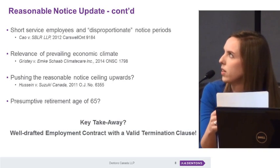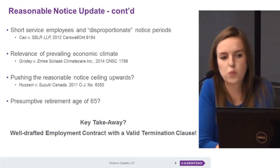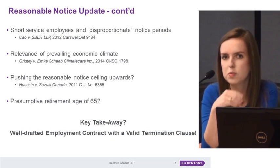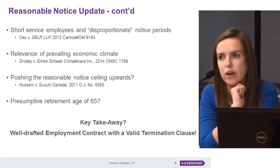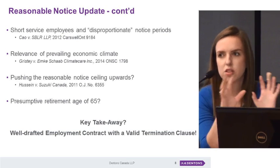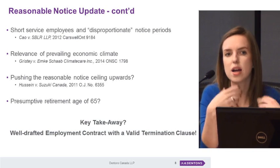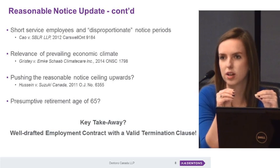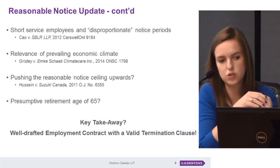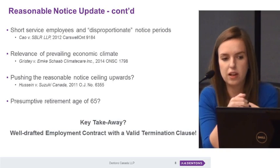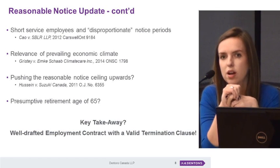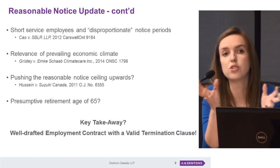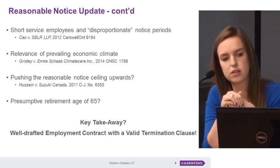Another interesting development is that courts will occasionally take prevailing economic conditions into consideration — not one of the clear Bardal factors, but in a few more recent decisions, the court will assess the usual Bardal factors and then, given the depressed economic situation of the employer, discount the common law reasonable notice period. In the Gristi decision particularly, the court literally used the word 'discount' — reducing the notice period by a month to account for the fact that the employer was struggling and would likely have had to reduce the employee's hours in the near future anyway.